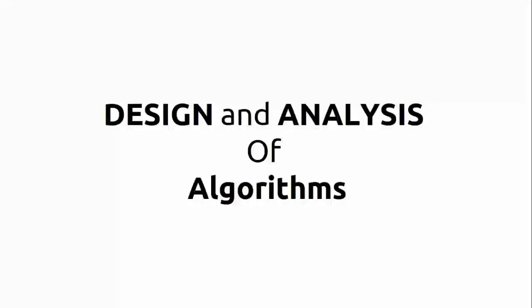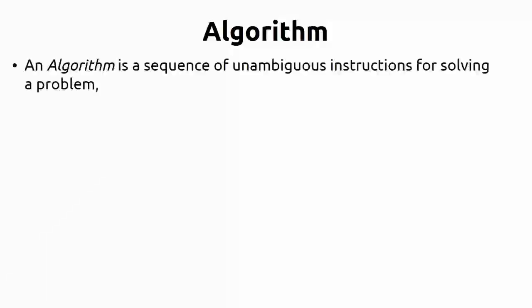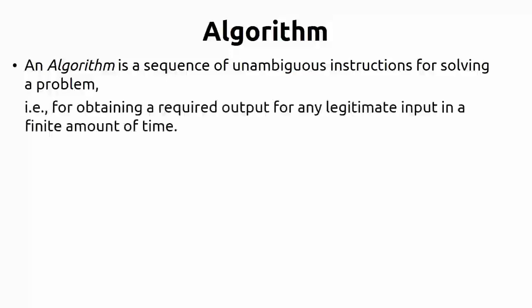Welcome to the class of Design and Analysis of Algorithms. Now the real subject starts. We will go to the definition of an algorithm. An algorithm is a sequence of unambiguous instructions for solving a problem. At a basic level we know it is a step-by-step process, but here we'll go somewhat in depth. The key point is that these instructions are unambiguous.